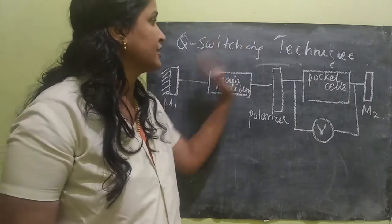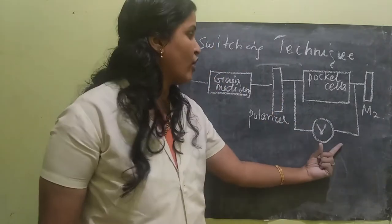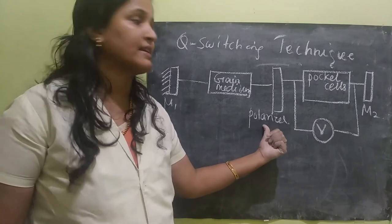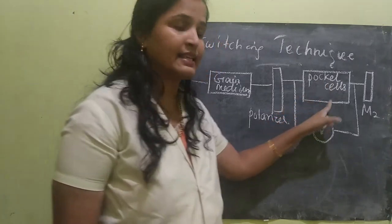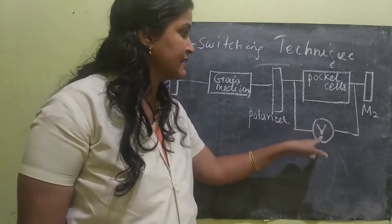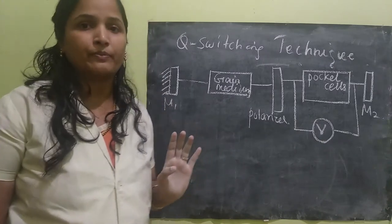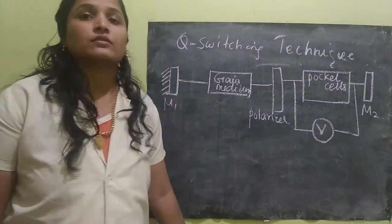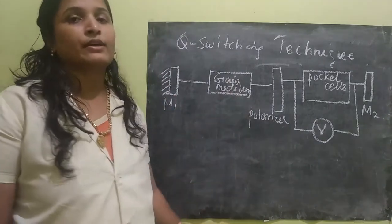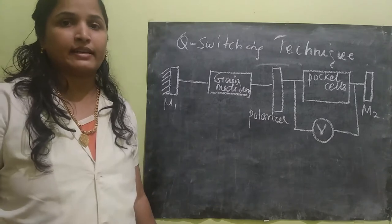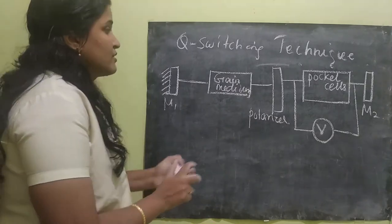M2 is partially reflecting, and in between we have a gain medium or active medium. In addition to these, we will have two extra components: one is a polarizer and another one is a Pockels cell, powered by a voltage source V. Now let's see the working of this Q-switching technique.